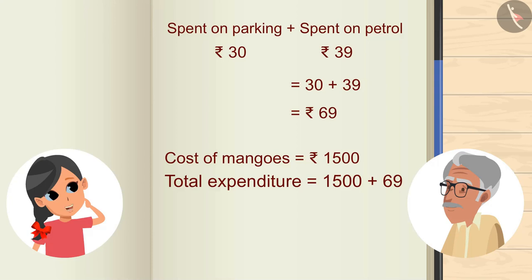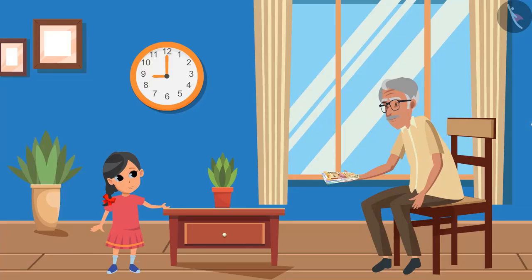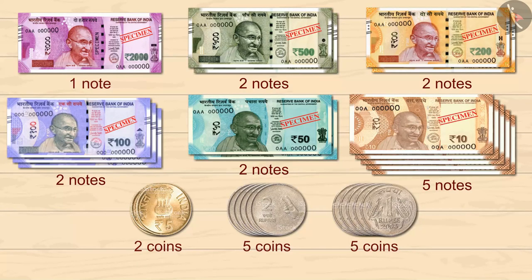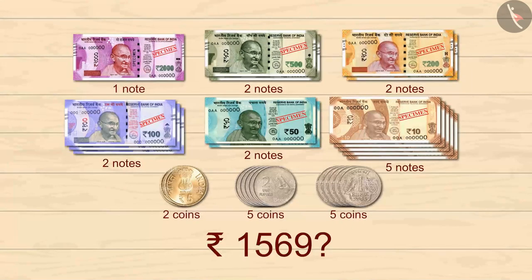Add 30 rupees of parking to this too. 30 plus 39 is 69 rupees. So our total expenditure will be 1500 plus 69, that is 1569 rupees, Grandpa. Okay, look — I have these many notes and coins with me. How would you make 1569 out of these?